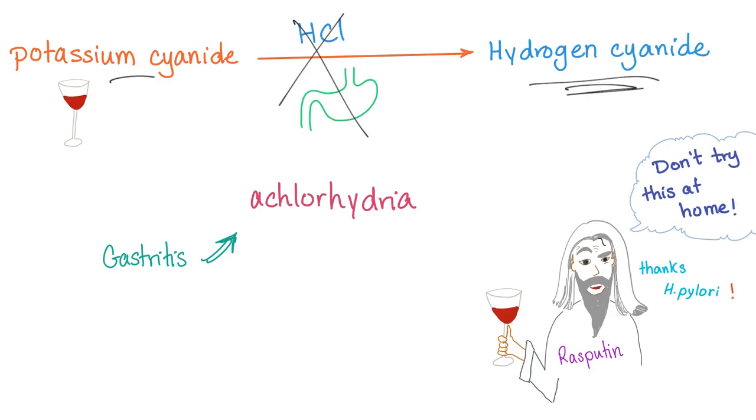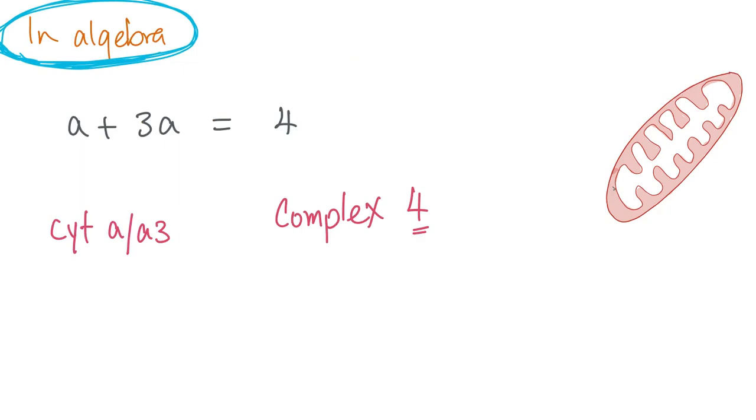Another mathematical mnemonic. In algebra A plus 3A equals 4A. That's why complex 4 is cytochrome A and cytochrome A3.